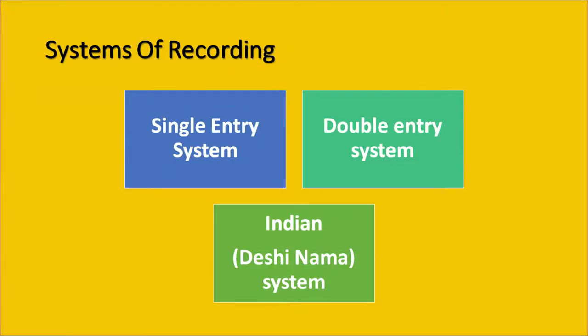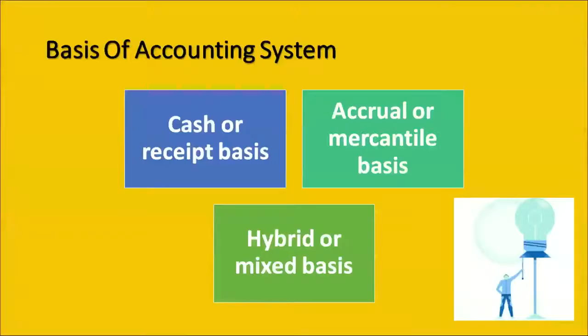Now let's talk about the system of recording. There can be three ways. First is the single entry system, which takes into account the personal aspects of accounts. The double entry system considers both the personal and non-personal aspects. We also have the Indian system called Deshi Nama, which is somewhere midway between the two. For the basis of accounting: the cash or receipt basis takes into consideration only receipts or payments as they occur; the accrual or mercantile basis records transactions whenever they become due, regardless of whether physically received or paid; and the hybrid or mixed basis is midway between the two.